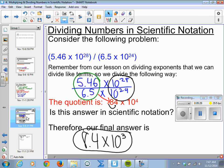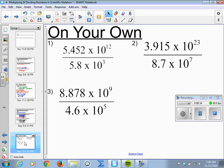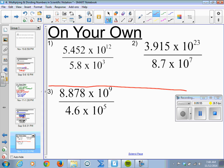So let's go ahead and try a couple on our own or with me. Pause the video or stay with me. So the first I'm going to divide 5.452 by 5.8, and this will give me number 1 here. Work it out. We get 0.94 and 12 minus 3 is 9 times 10 to the 9th.